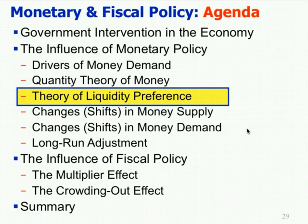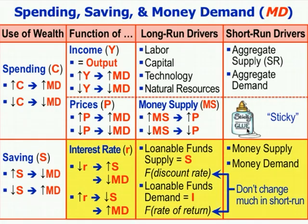So that was the quantity theory of money and what we looked at before. Changes in money supply primarily drove prices in the long run, and money supply really didn't affect real things like real GDP. But in the short run, we just saw why that's not the case. Which brings us to the theory of liquidity preference — the idea that money supply and money demand in the short run actually drive the interest rate.